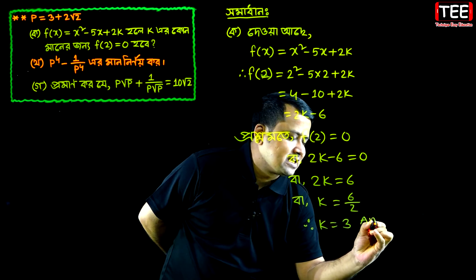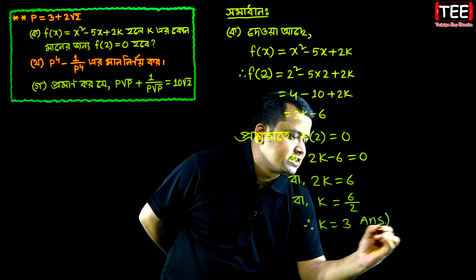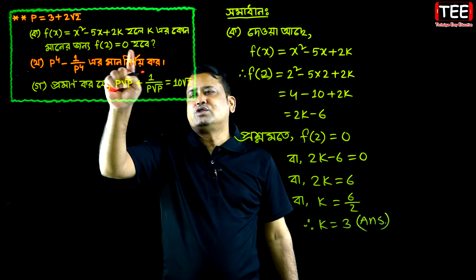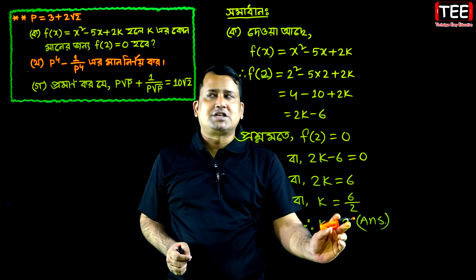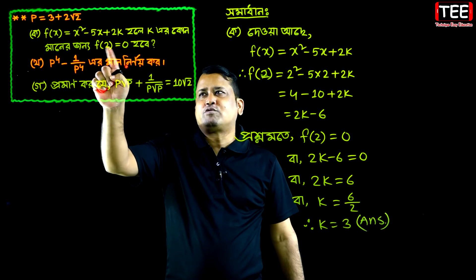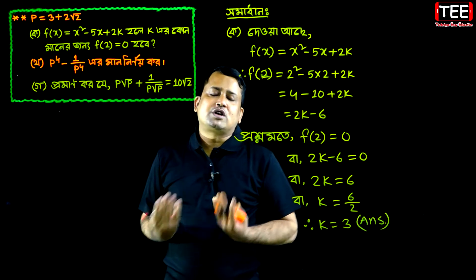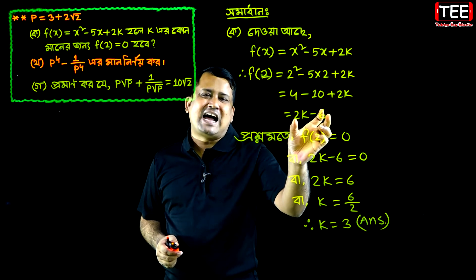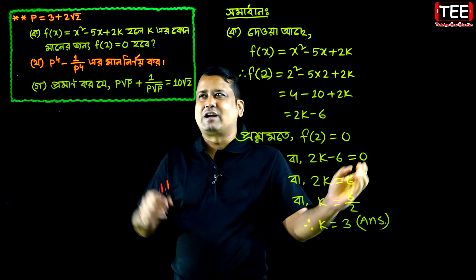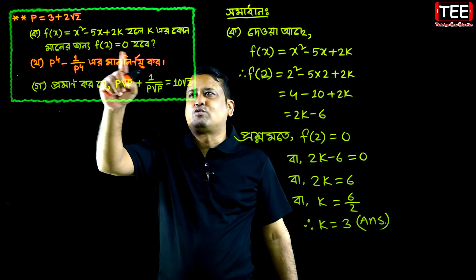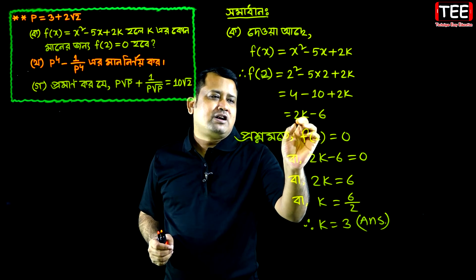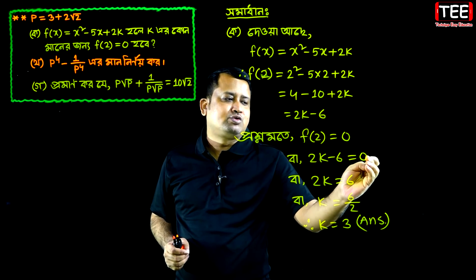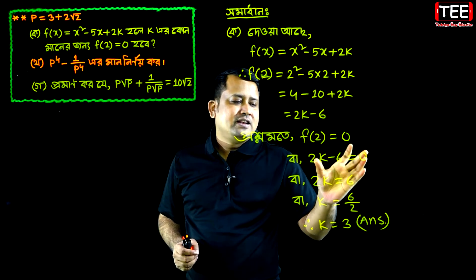Our answer is: the answer is A of 2 equals 0. When A of 2 equals 0, the answer gives 2k minus 6. So 2k minus 6 equals 0. That is the calculation.